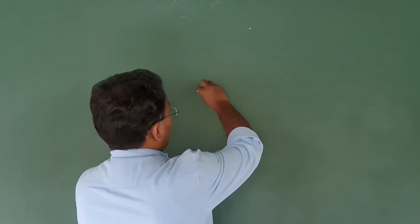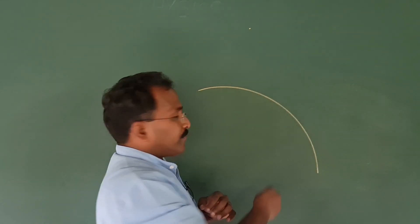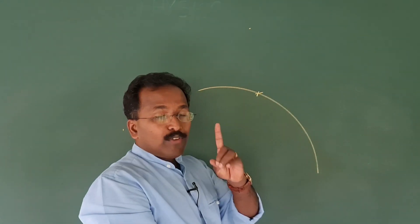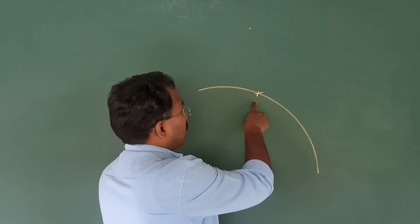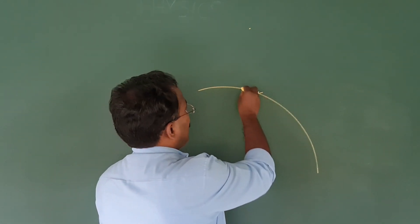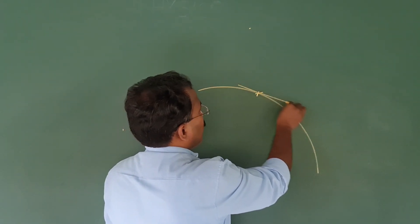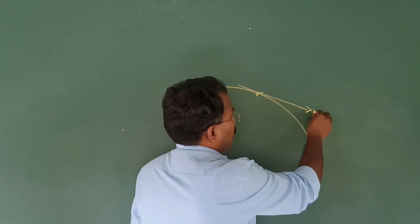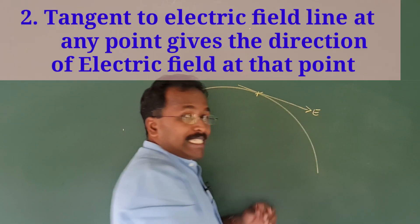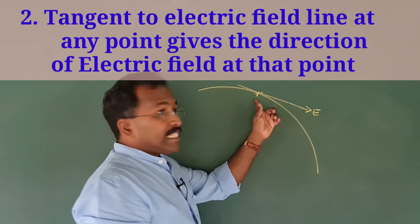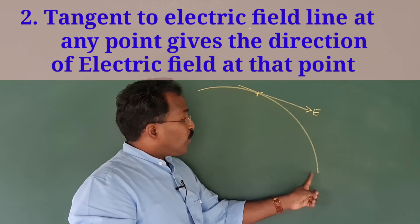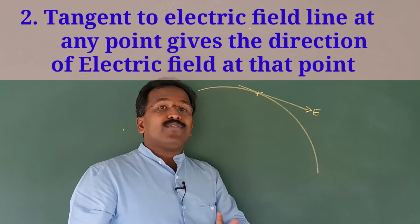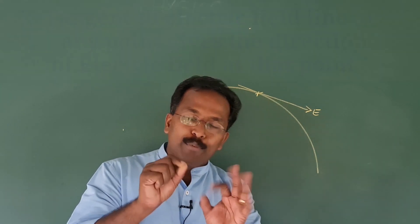Imagine a field line like this, and imagine a point here. If you want to find the direction of the electric field at this point, what you have to do is draw a tangent there. So this is the second idea: the tangent at any point on an electric field line gives the direction of the electric field at that point.